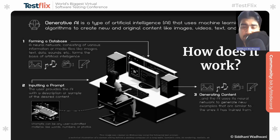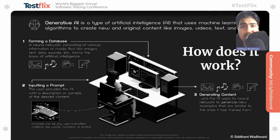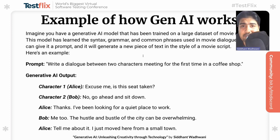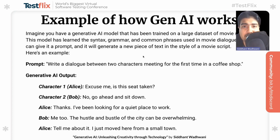So how does Gen AI work? You're probably familiar with the input-process-output, or IPO model, widely used in system analysis and software engineering. There are three basic steps involved: forming a database, inputting a prompt, and generating content. As a simple example focusing on text generation, I gave it a prompt to write a dialogue between two characters meeting for the first time in a coffee shop, and the generative AI model was trained on a large dataset of movie scripts. It analyzed the patterns from that dataset and used that knowledge to create a new dialogue that fits the prompt.